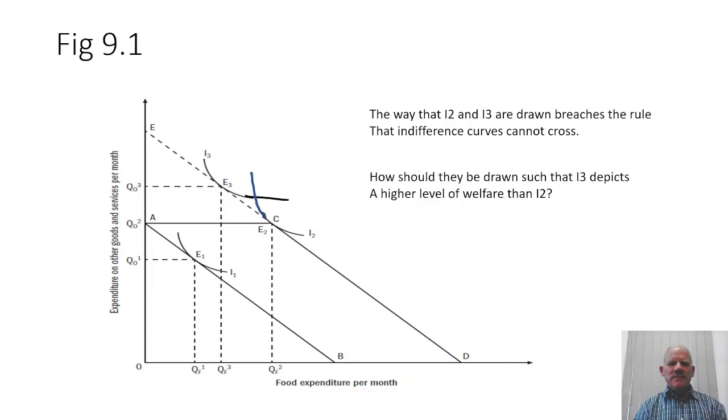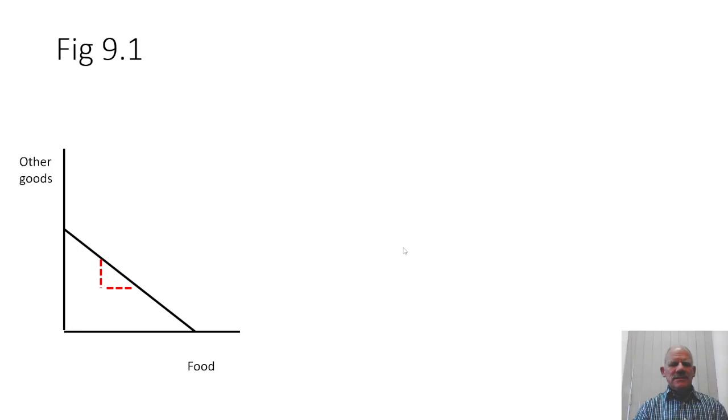Okay, the second video on Chapter 9 starts with Figure 9.1. I think Figure 9.1 is quite important. It's on the question whether we want cash or in-kind transfers.